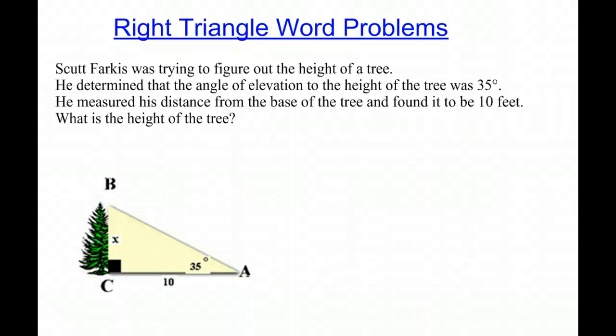Today we'll be working on right triangle word problems, an example shown. Scott Farkas was trying to figure out the height of a tree. He determined that the angle of elevation to the height of the tree was 35 degrees, as shown in the figure here.